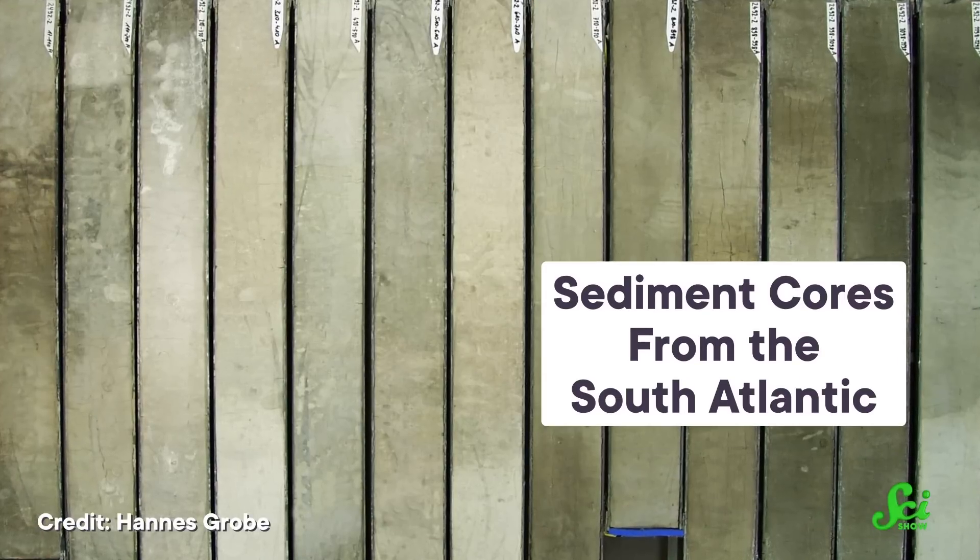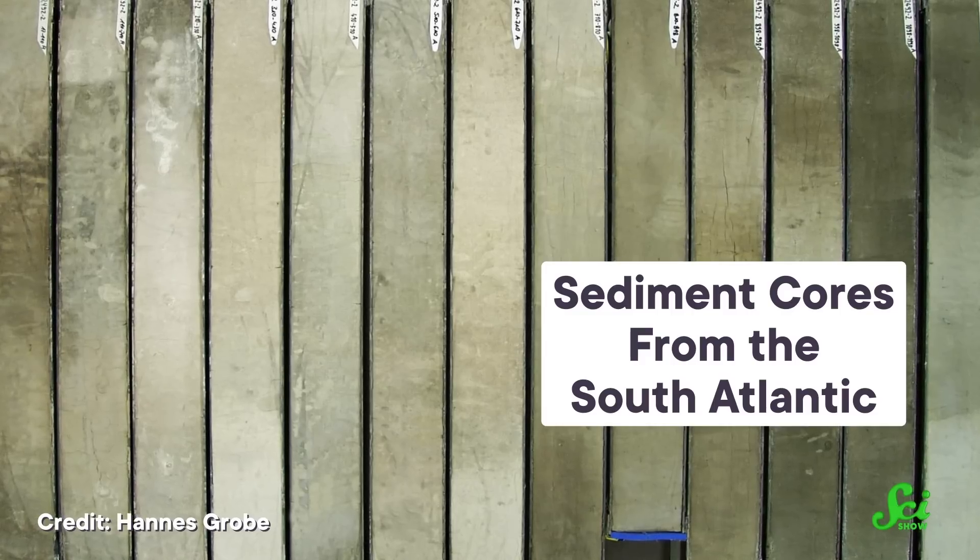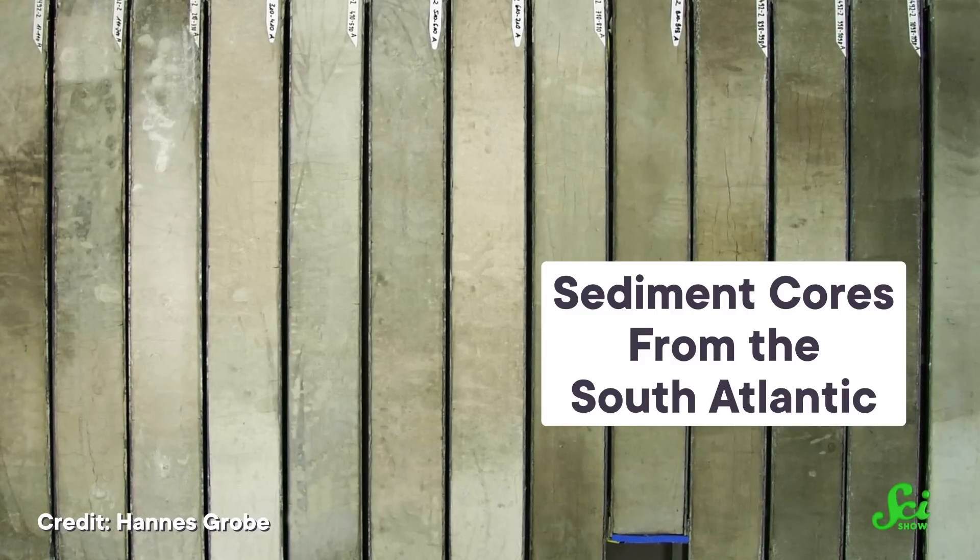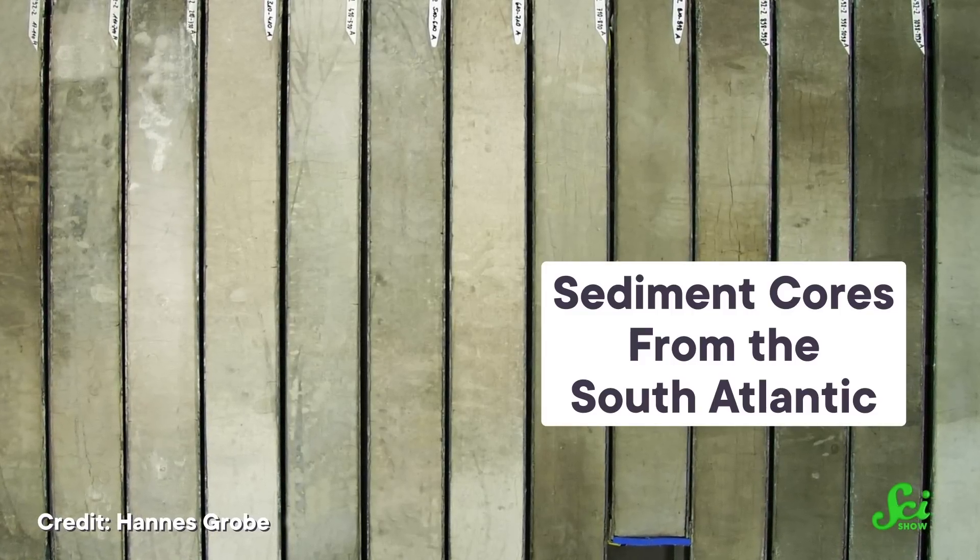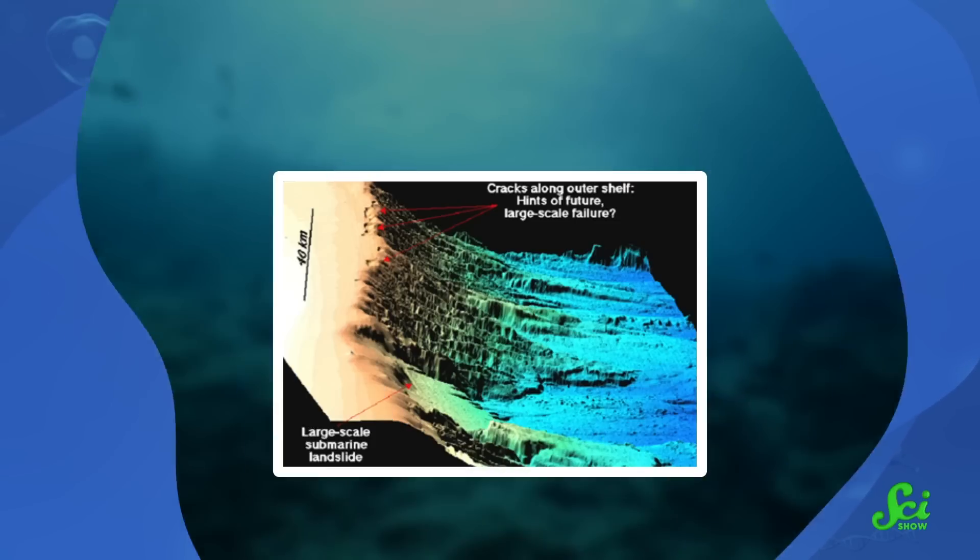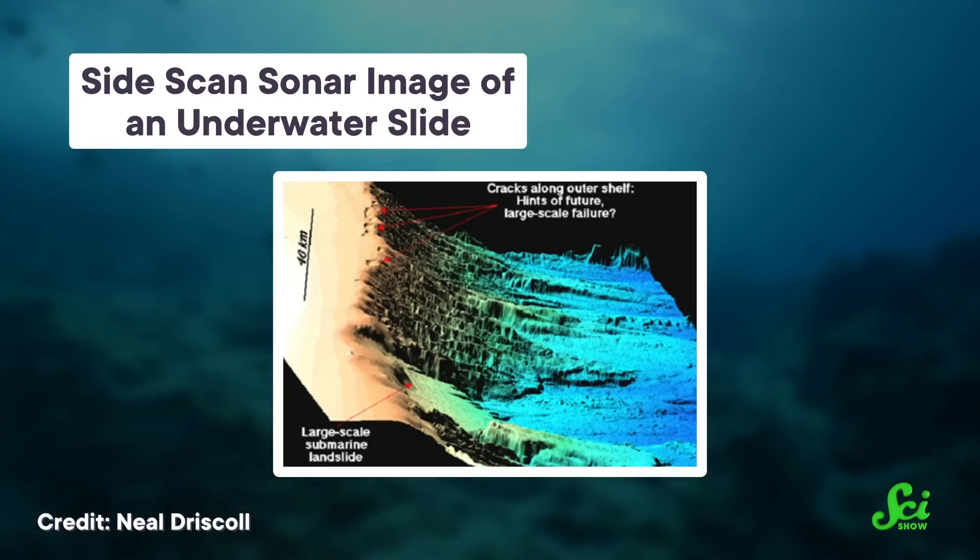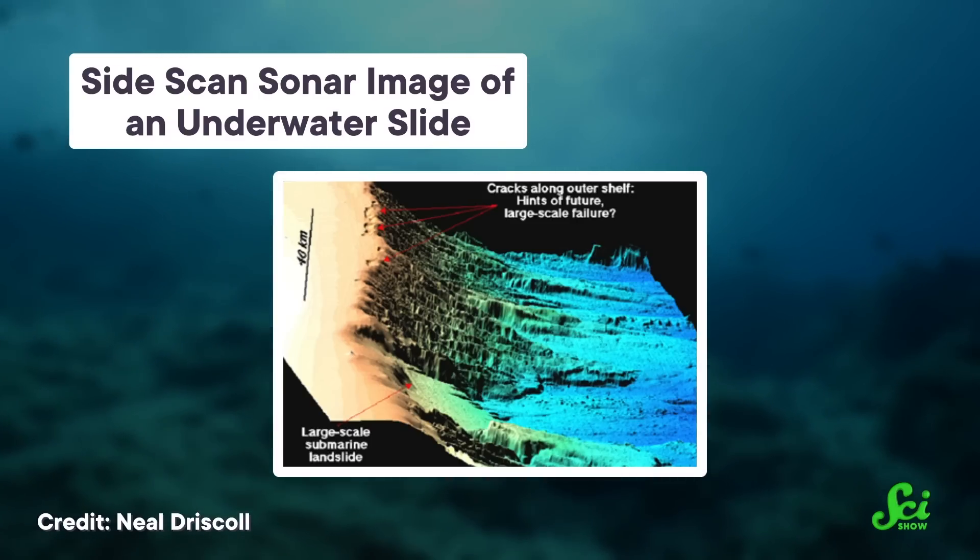Their second dataset came from a sediment core. A sediment core is a long, tube-shaped sample that has been drilled out of the ground, or in this case, the seafloor. It gives scientists a direct look at the layers in a certain area. This was taken from a region near the landslide that had not been disturbed. With these two datasets in hand, the authors of the study matched up the layers in each one so they could compare them.